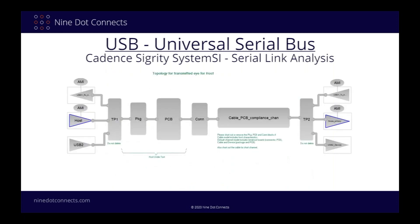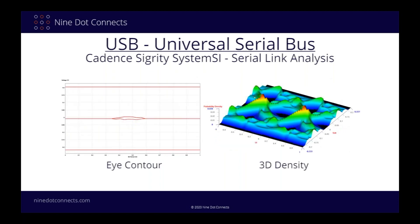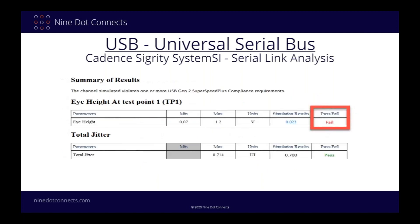One last graph I'd like to show is something called a bathtub graph. The name comes from the fact that the graph has two sides that kind of look like the cross section of a bathtub. Bathtub graphs help us measure something known as bit error rate, or BER. A bit error occurs when the transition from one bit overlaps the setup or hold time of the adjacent bit, in effect causing the wrong value to be detected. The narrower the width of the bathtub, the more bit errors you could expect. And this particular bathtub graph looks pretty good.